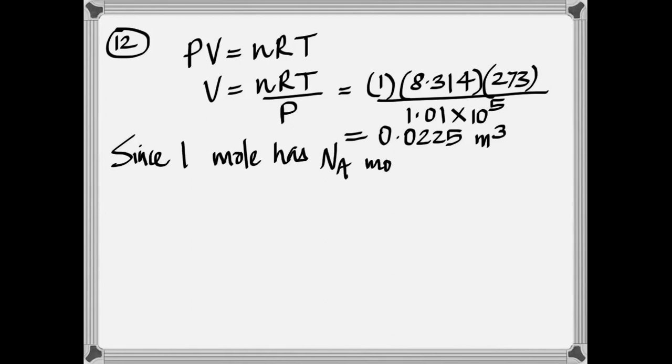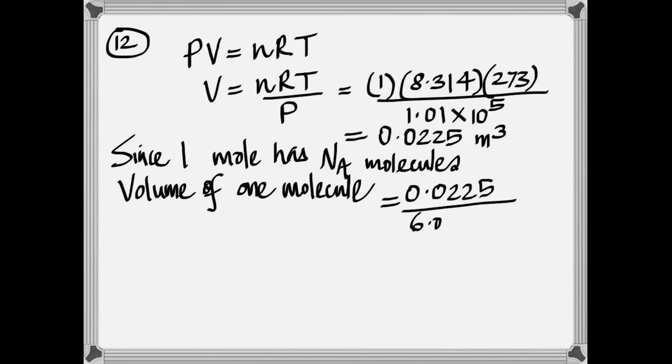And one mole has the Avogadro number, which is 6.022 times 10 to the 23. So the volume of one molecule would be the total volume divided by that number.